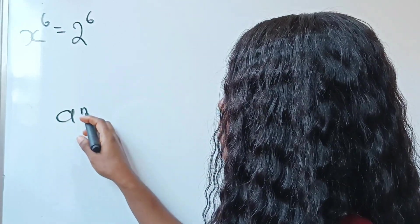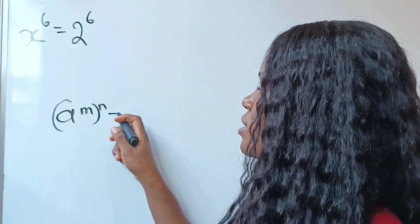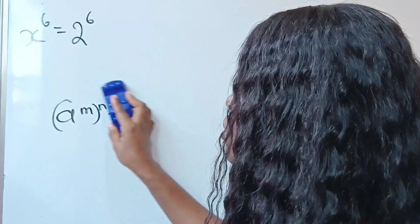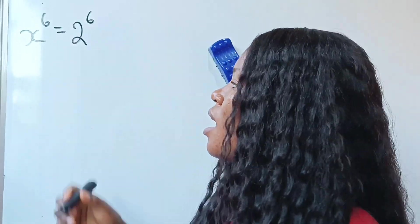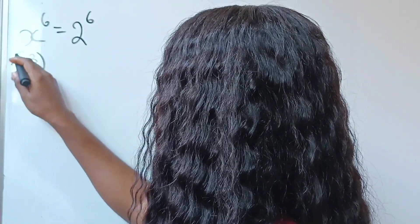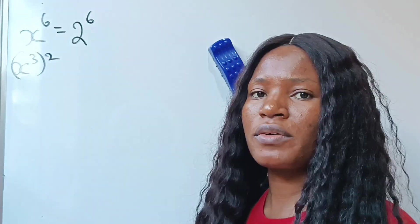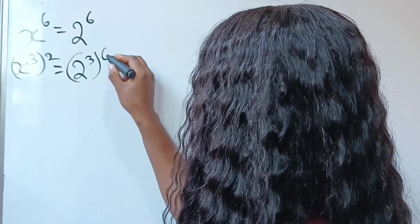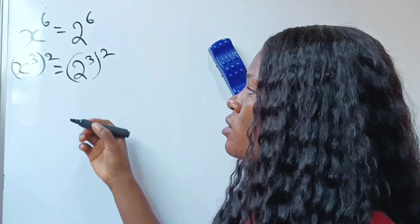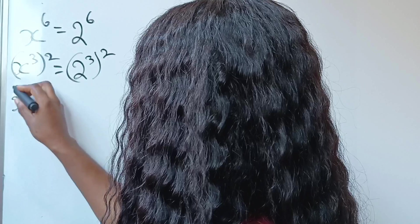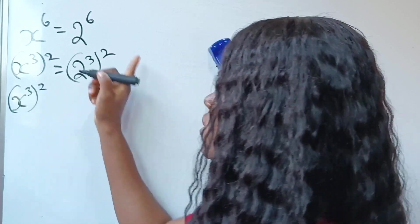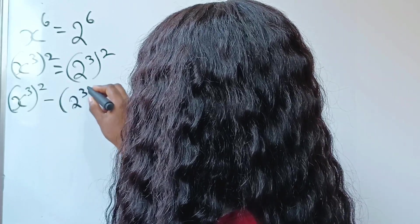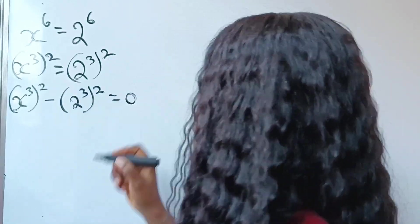When you have a to the power of m raised to the power of n, this is written as a to the power of m times n. So that simply means that I can rewrite x to the power of 6 as x to the power of 3 raised to the power of 2, because 3 times 2 gives us 6. It is equal to 2 to the power of 3 raised to the power of 2 as well. So we can now write x to the power of 3 raised to the power of 2, and transfer this to the left-hand side: minus 2 to the power of 3, raised to the power of 2, is equal to 0.